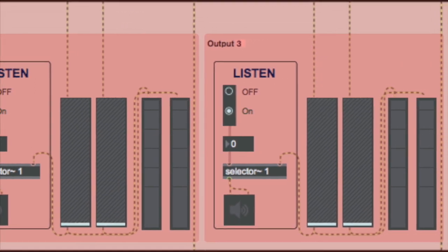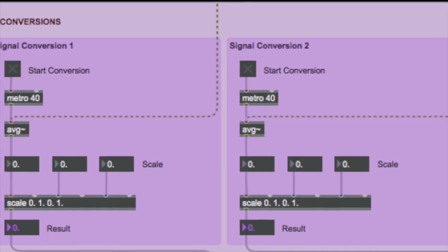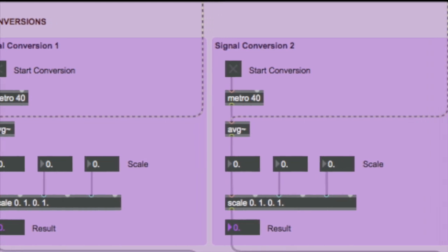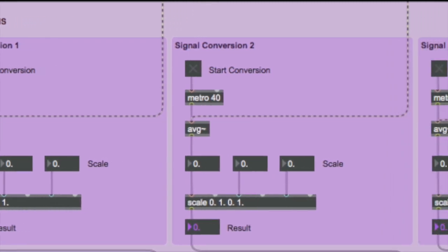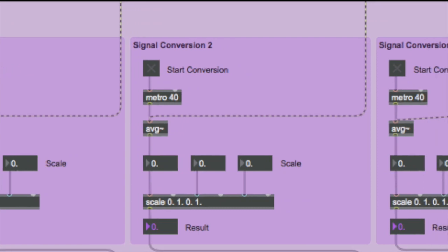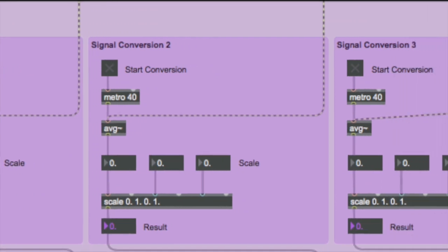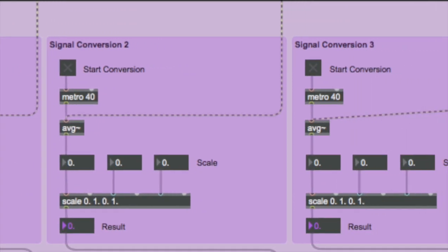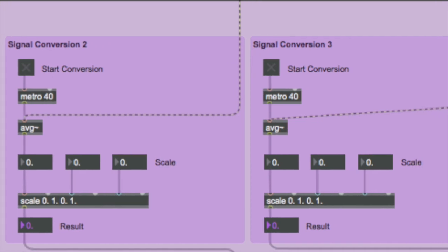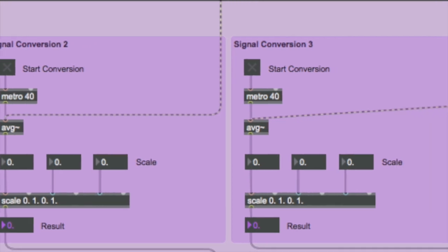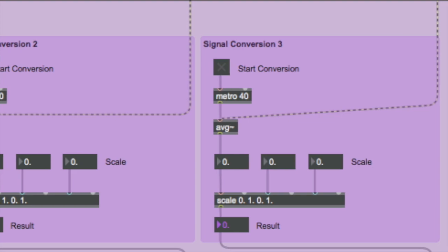Then we have our conversion module. It's the way the signals will be converted to digits. You can scale the amount of conversion — if you want to increase the digit and increase the effect, you can scale it.